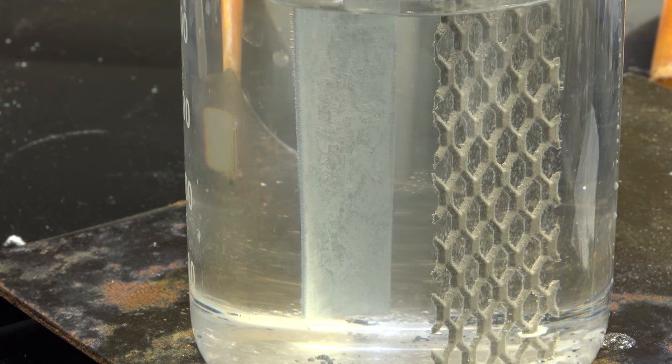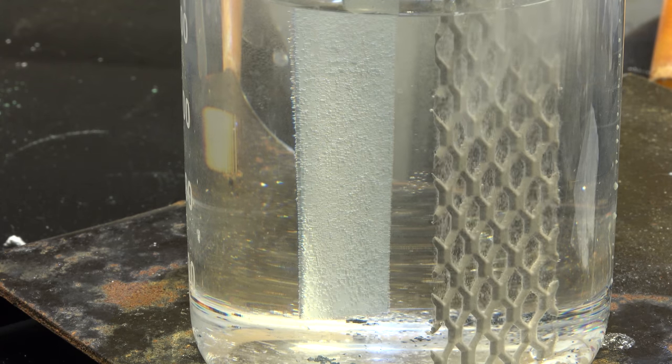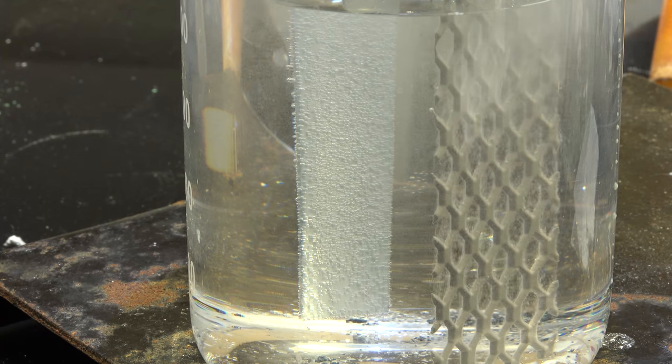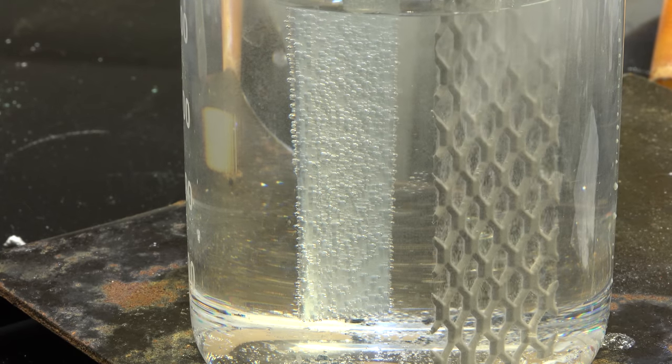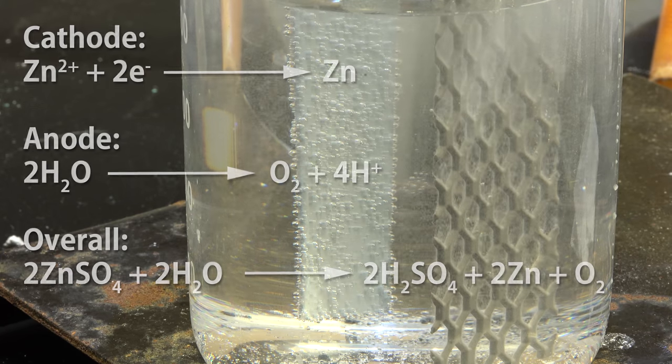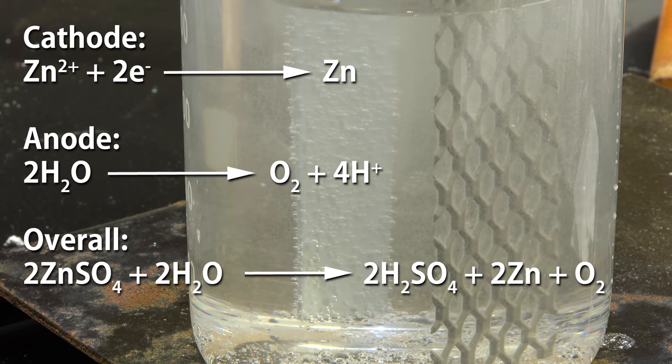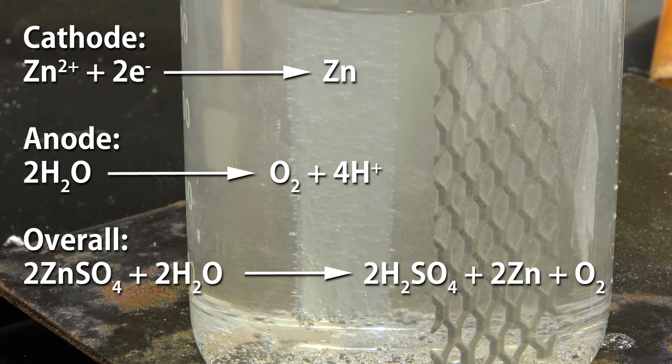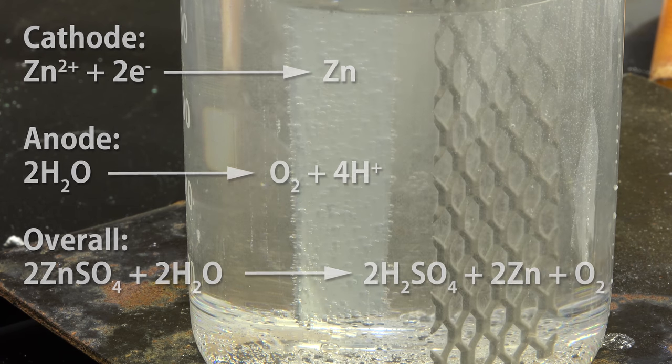Now we apply the current. Because we can still generate unwanted hydrogen if we apply too much current, we'll need to use a very low current density of less than 30 milliamps per square centimeter of cathode area. Preferably 20 milliamps. What's happening is the zinc ions are being reduced to zinc metal at the cathode. At the anode water is being oxidized to oxygen. Overall we're converting zinc sulfate to sulfuric acid, zinc metal and oxygen.